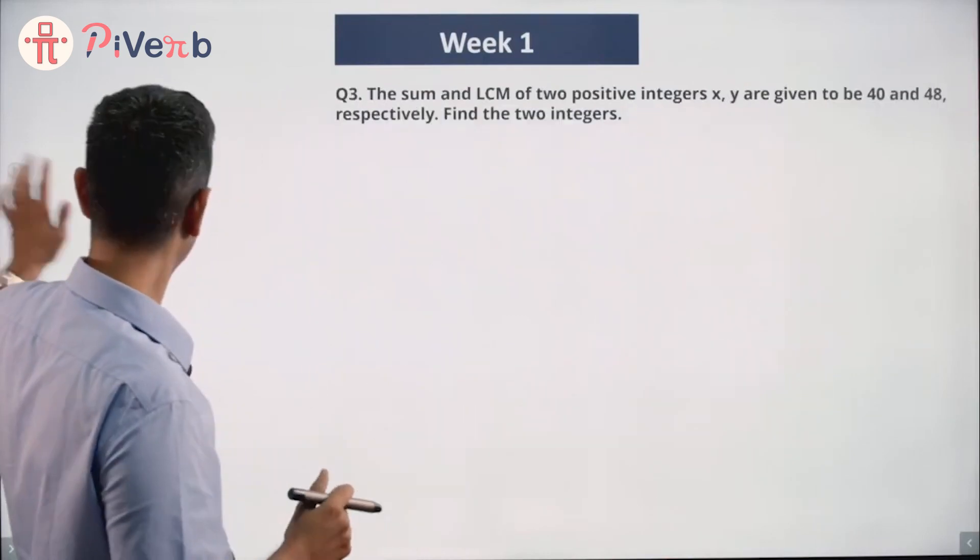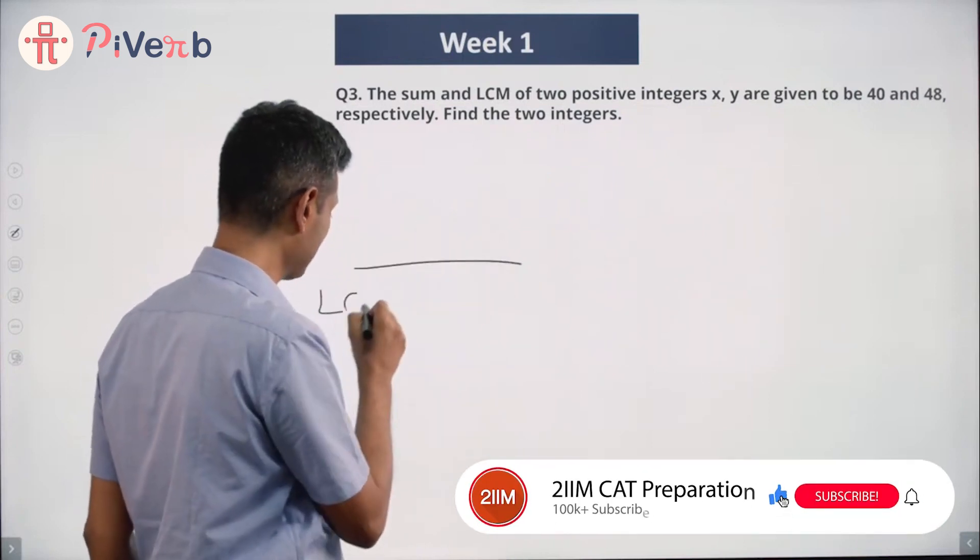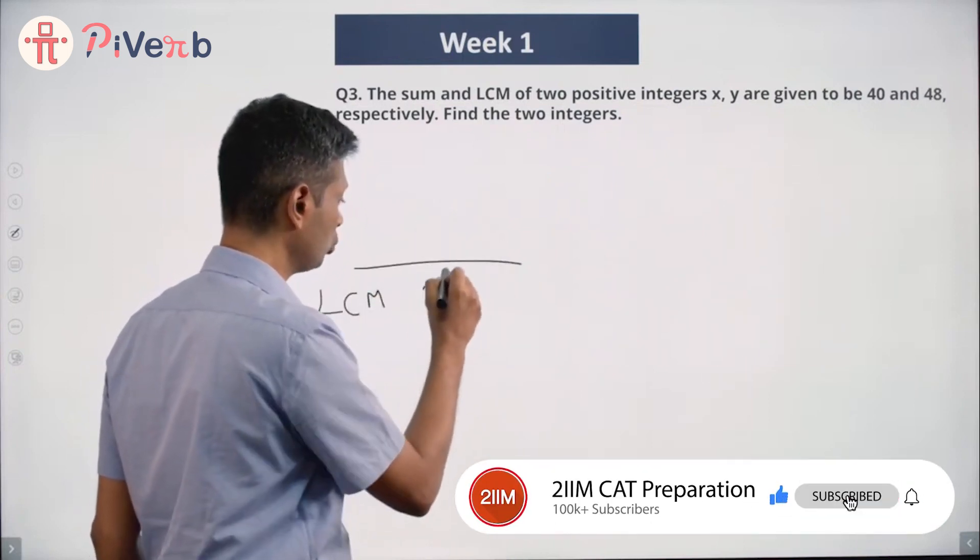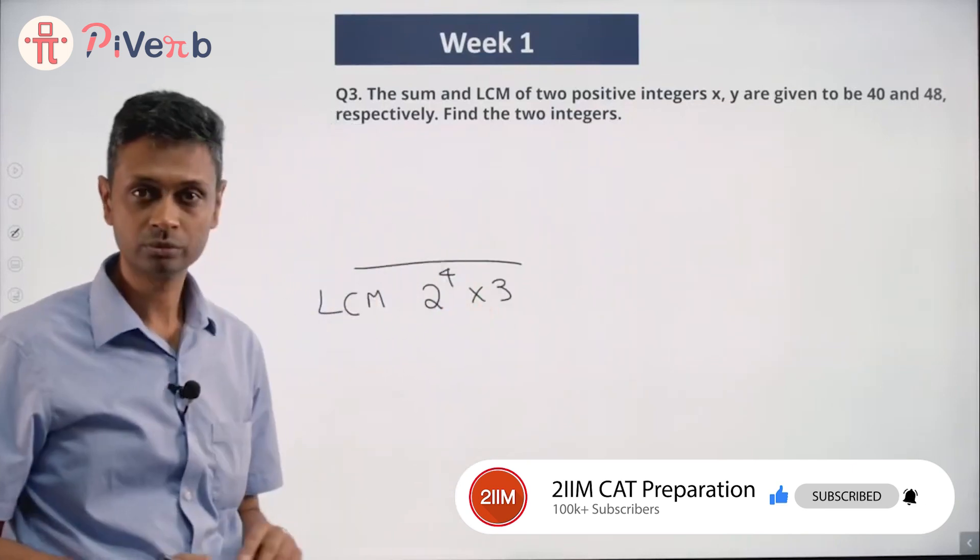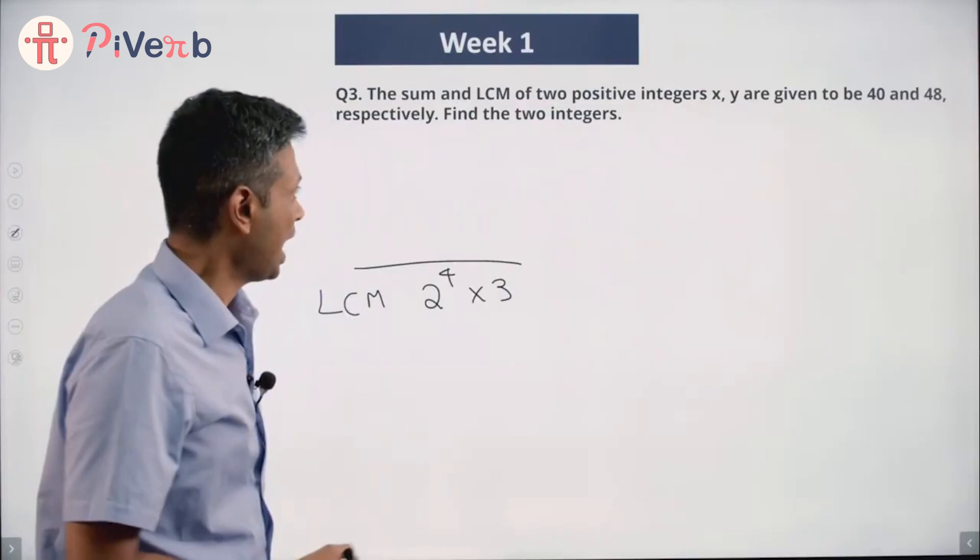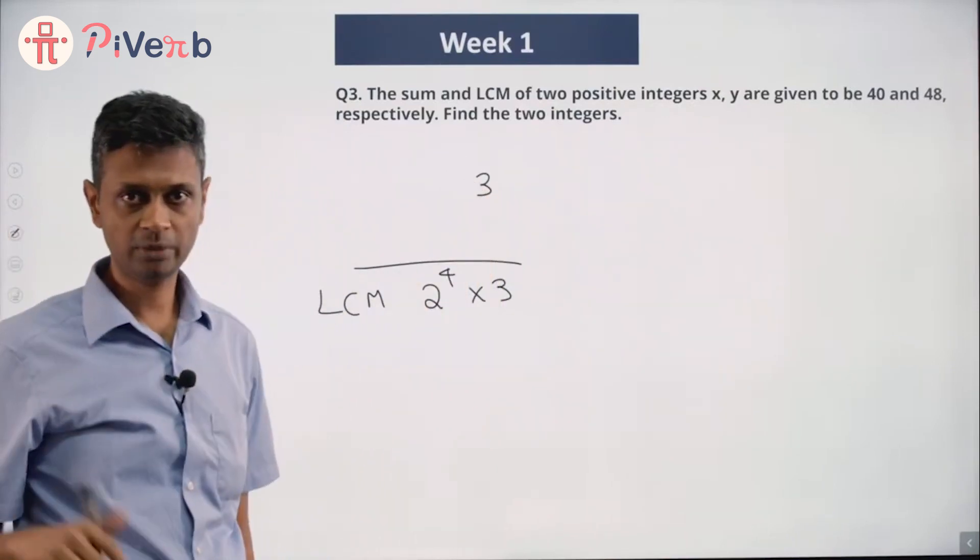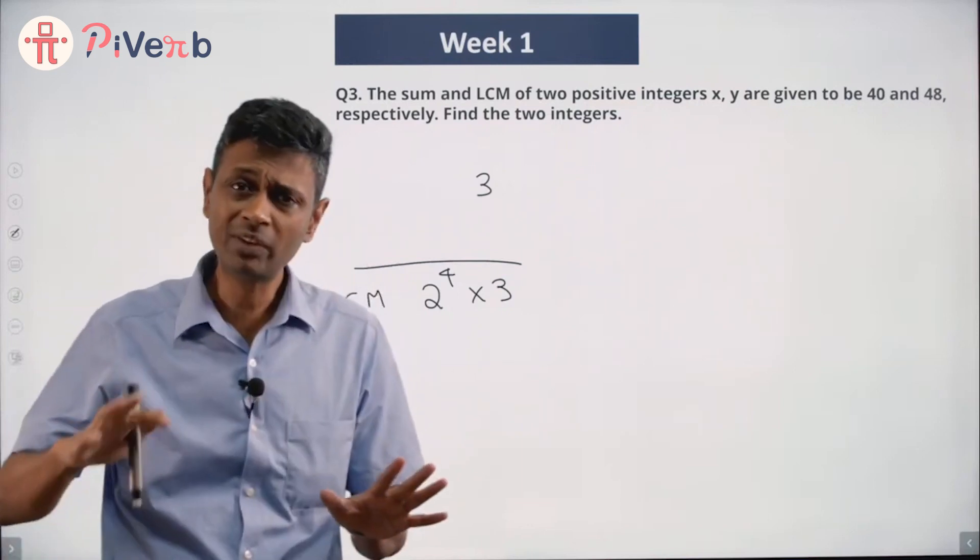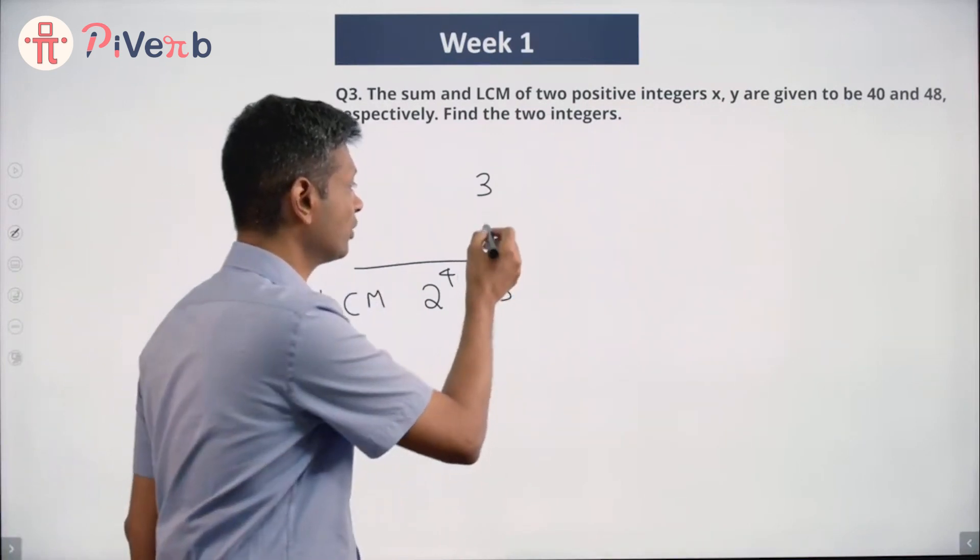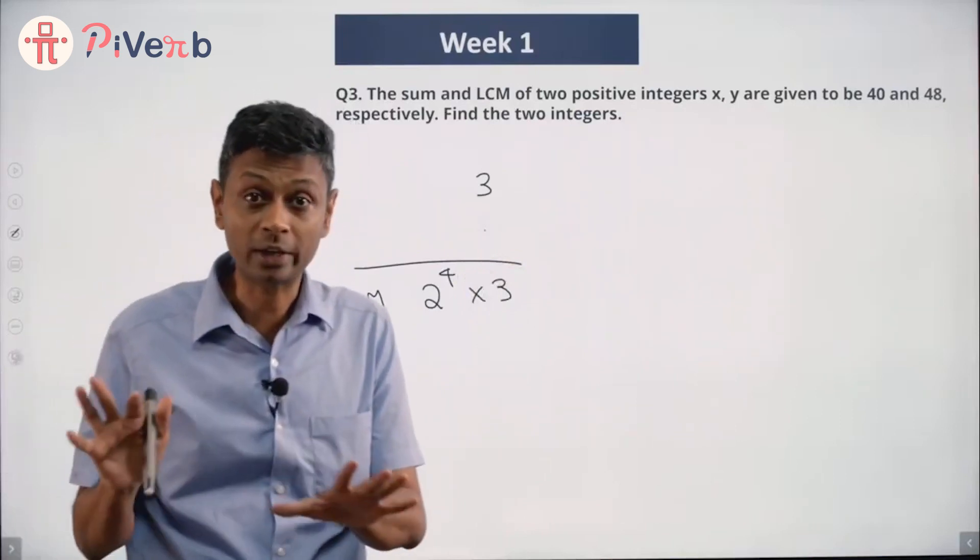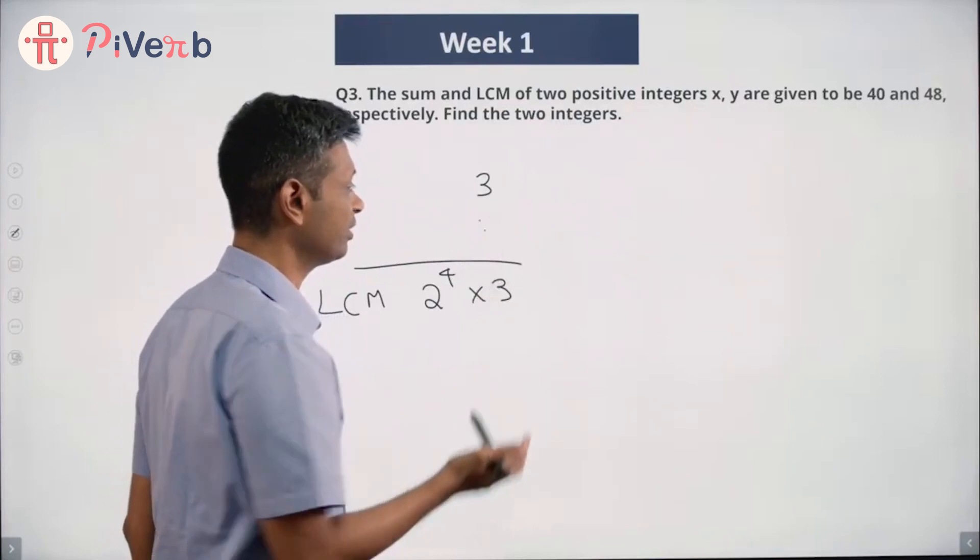Now I want to have two prime factorizations where the LCM is 2 to the power 4 into 3. Number 1 and number 2. I could have one of the numbers should have a 3. I will put one of the numbers has a 3; it could have other things also. The other number can also have a 3, but we cannot have a 3 squared. This could have a 3; this need not have a 3.